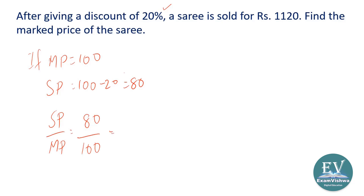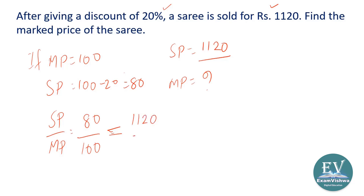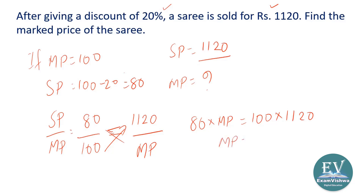Now the same relationship is applied to the real selling. The selling price is given as 1120, and we are asked to find the marked price. So selling price upon marked price: 80 upon 100 equals 1120 upon X. Cross multiply: 80 into X equals 100 into 1120. X equals 100 into 1120 upon 80. Solving this gives the marked price as 1400 rupees.